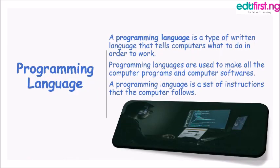So what then is a programming language? A programming language is a type of written language that tells the computer what to do in order to work. They are used to make all the computer programs and software that you know. Your computer is only as good as its software, and these softwares are built with the help of a programming language. So a programming language is a set of instructions that the computer follows. The computer cannot work on its own without software, and this software is written with the help of a programming language.